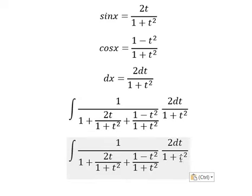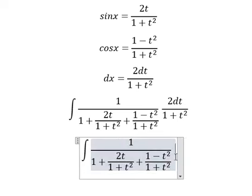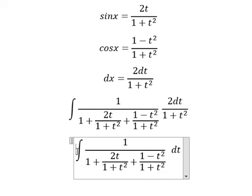Now 1 plus t squared will multiply by this one, so we have like this. I will put 2 in here.